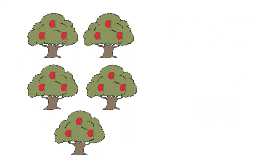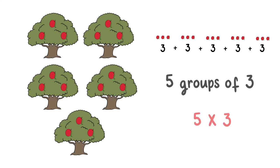Let's take a look at how many groups of apples are on the tree. There are five groups of three. We can write this as 5 times 3.